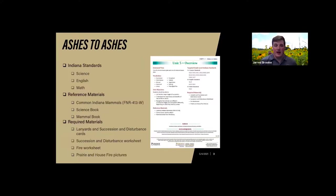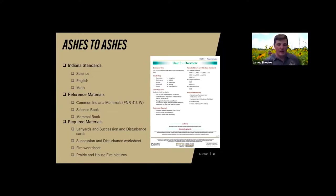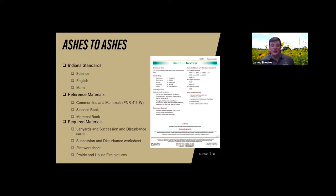The Indiana standards this lesson covers include science, English, and math — you can see all those state standards on the overview page. Good reference materials include a common Indiana mammals publication, which is free for download, a biology or environmental science book that covers succession with charts and graphs, and some sort of mammal guide. Required materials are lanyards or yarn, succession and disturbance cards, succession and fire and disturbance worksheets, and pictures of a prairie or forest fire and a house fire.